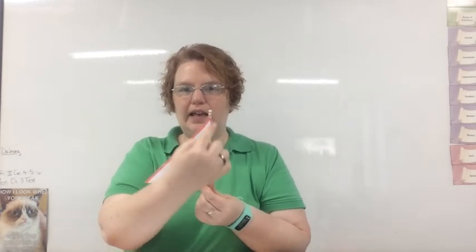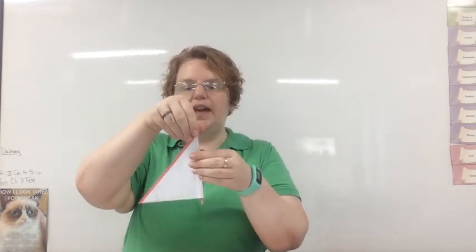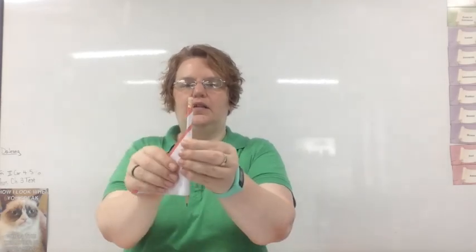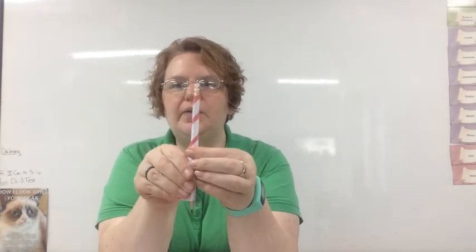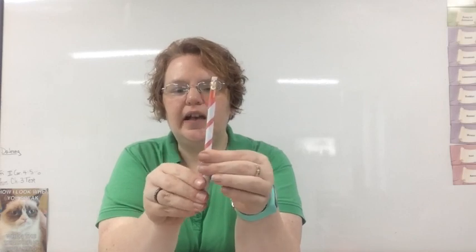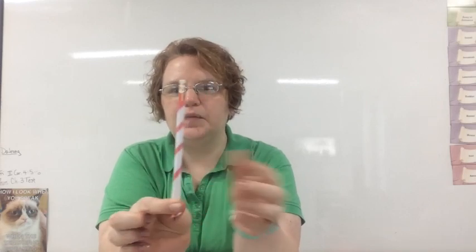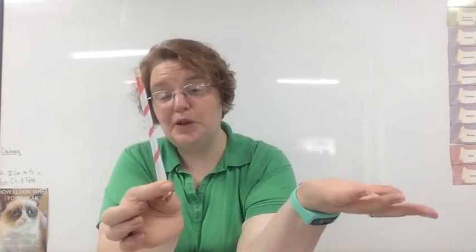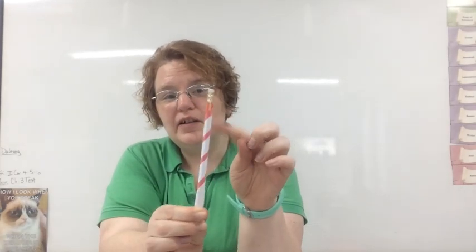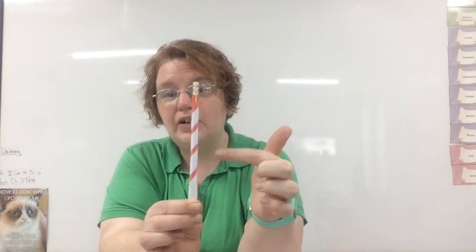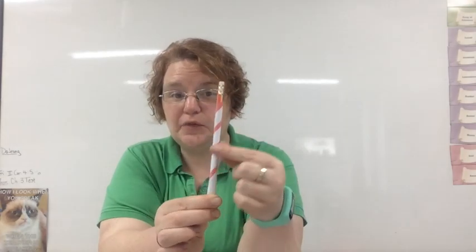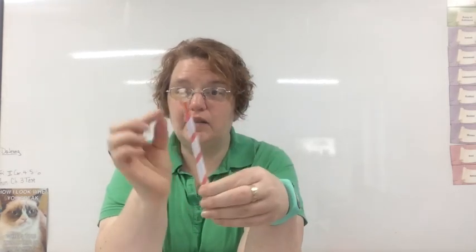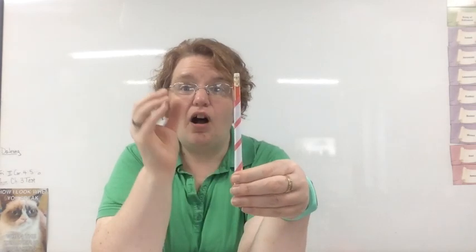All right. So I have my inclined plane and I have the axle. Now watch what happens when I twist the inclined plane around that axle. Okay. What does that look like? You might think, well, it looks like a candy cane. You'd be right. But it also gives you an idea of how the threads form around that axle. Okay. So remember, inclined plane wrapped around an axle. That creates the threads on the screw.